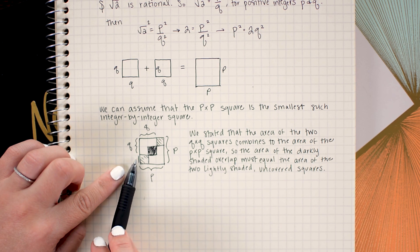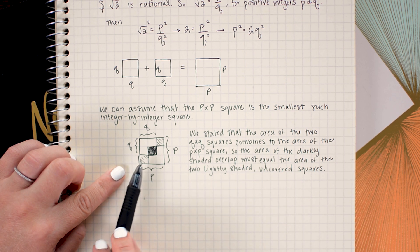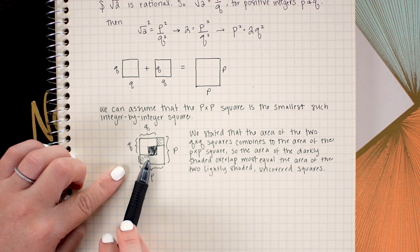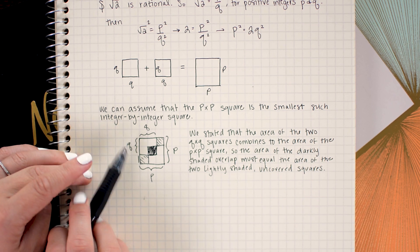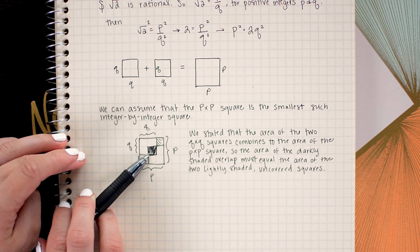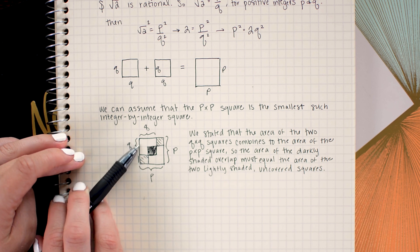And since I know that these two lightly shaded squares are integer by integer lengths, I can now deduce that the darkly shaded square is also an integer by integer because if I look at these areas here, I see that the side length of the dark square can be found by taking the entire length, p, which is an integer,